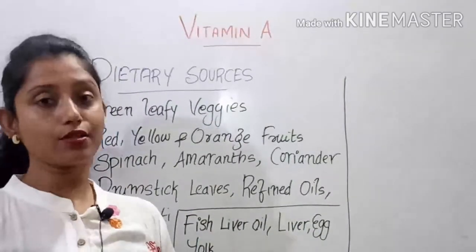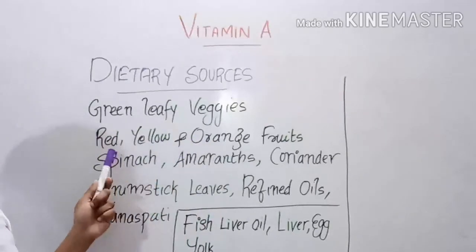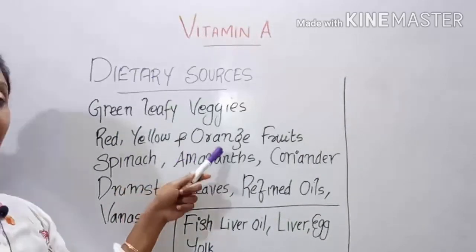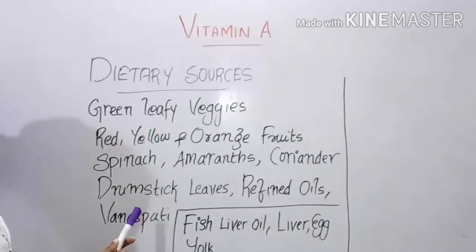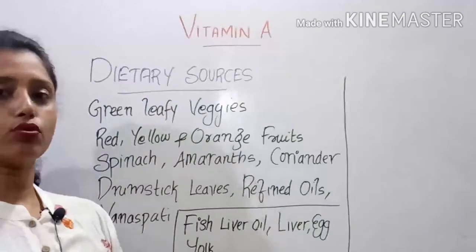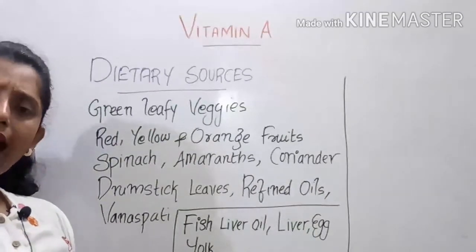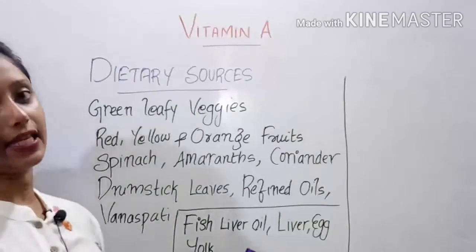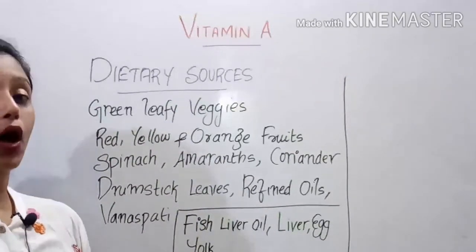The main dietary sources of Vitamin A are divided into plant and animal sources. Plant sources include green leafy vegetables, red, yellow, and orange fruits, spinach, amaranthus, coriander, drumstick leaves, refined oils, and vanaspati. Animal sources include fish liver, egg yolk, and animal liver.